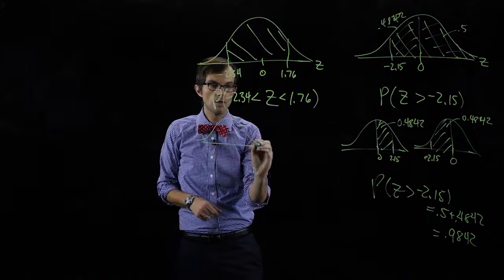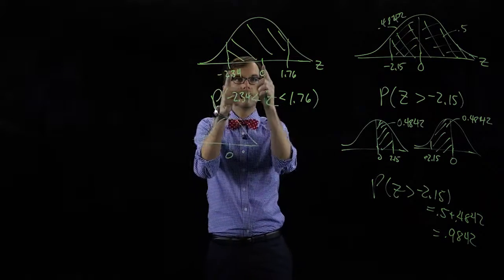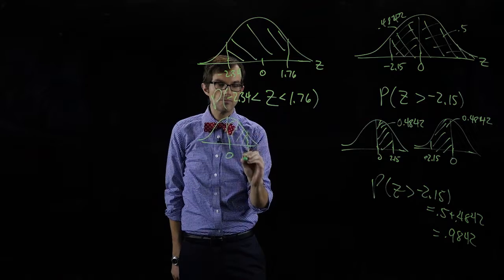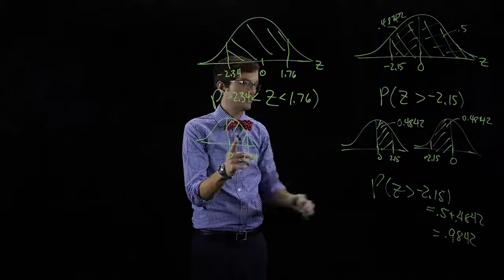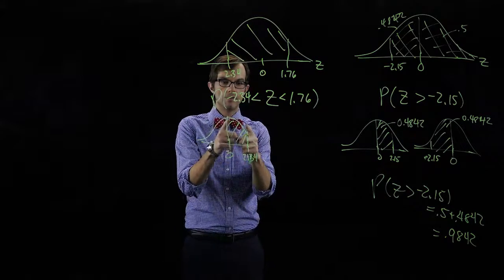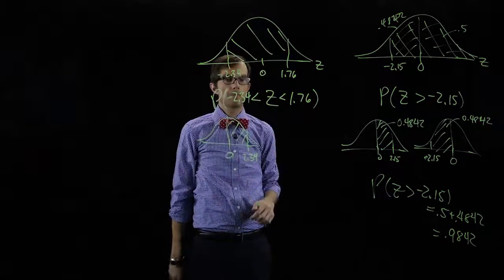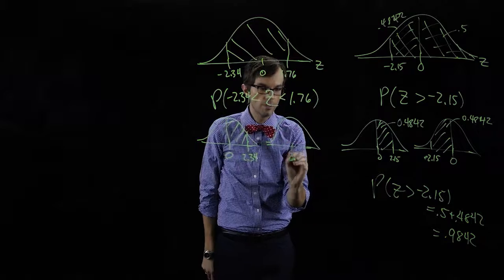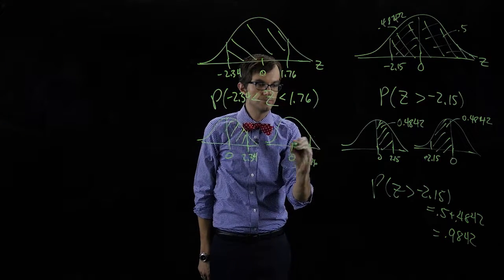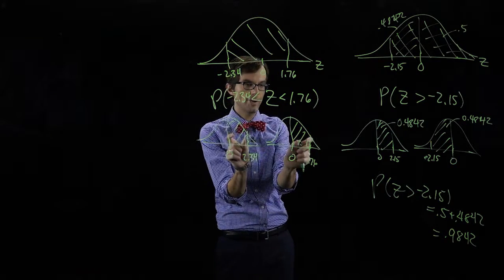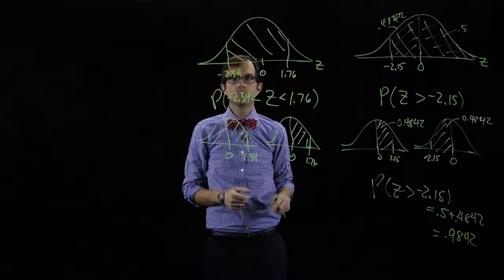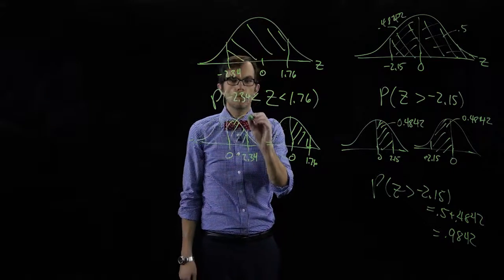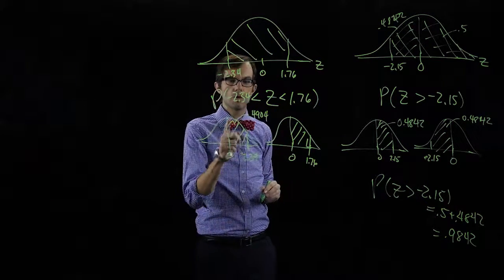So let's do that. We know that the area on the left side is equivalent to the area between zero and two point three four — it's a symmetric distribution, just like before. This area is the same as the mirrored area. We also need to find the area between zero and one point seven six. If we go to our lookup table down to row two point three, over to column point zero four, we get that this number is point four nine zero four.